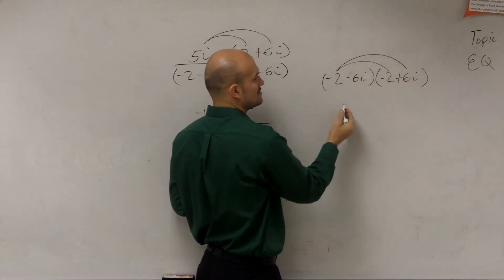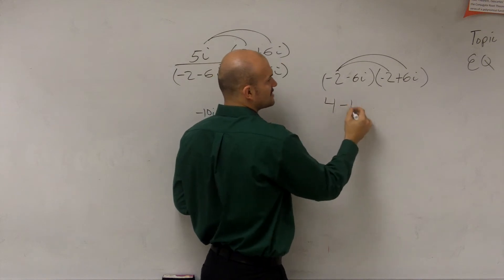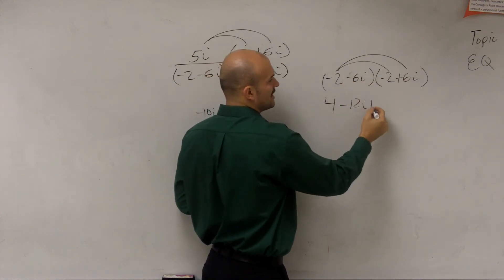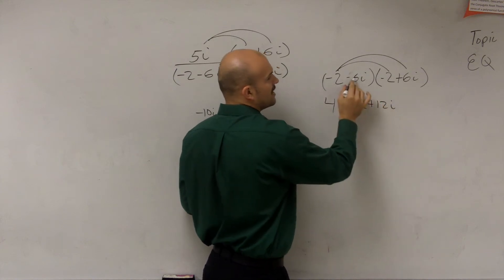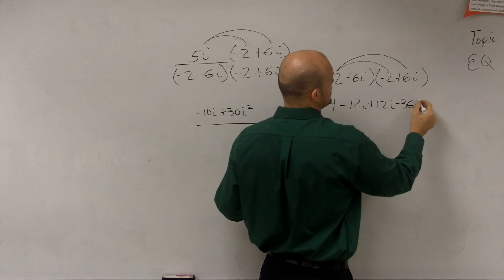I can do negative 2 times negative 2 is positive 4. Negative 2 times 6i is negative 12i. Negative 6i times negative 2 is positive 12i. And then negative 6i times 6i is negative 36i squared.